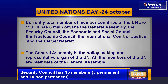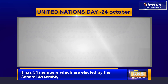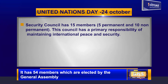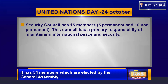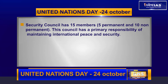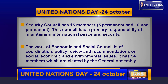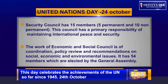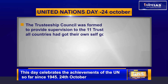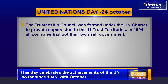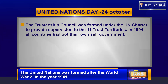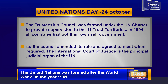The General Assembly is the policy-making and representative organ of the UN, and all UN members are members of the General Assembly. The Security Council has 15 members — five permanent and ten non-permanent — and holds primary responsibility for maintaining international peace and security. The Economic and Social Council handles coordination, policy review, and recommendations on social, economic, and environmental issues; it has 54 members elected by the General Assembly. The Trusteeship Council was formed to provide supervision to 11 trust territories, but by 1994 all countries had achieved self-government, so the council amended its rules to meet only when required.